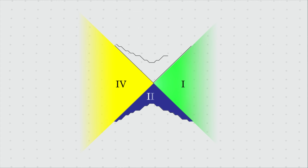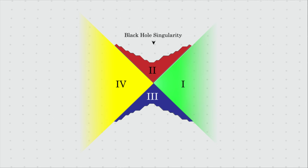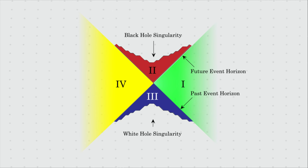Here is the spacetime diagram of an extended black hole known as the Kruskal spacetime diagram. Region 1 is the area outside the black hole. Region 2 is the black hole, and the shaded region is the black hole singularity. The boundary between region 1 and region 2 is the event horizon. Once you enter from region 1 to region 2, there is no hope of getting out. All light cones from the black hole end up in singularity and cannot reach region 1. Region 3 is a wormhole — we can never reach it, but things from region 3 can escape to us. Region 4 is a mirror image of our universe.